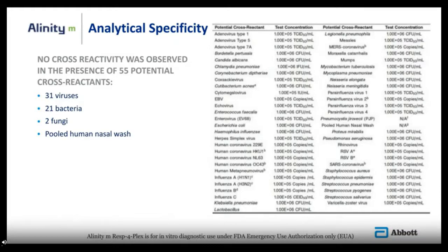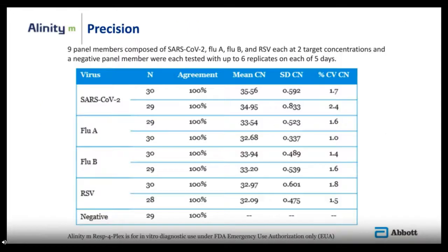In the analytical specificity study, 55 potential cross-reactants were tested, including 31 viruses, 21 bacteria, 2 fungi, and a pooled human nasal wash. No cross-reactivity was observed with any of these potential cross-reactants. For precision, nine panel members — two target levels each for SARS-CoV-2, flu A, flu B, and RSV, plus a negative member — were tested across up to 30 replicates over five days. 100% agreement was observed compared to expected results, and excellent precision was demonstrated by evaluating SD and percent CV of PCR cycle numbers.